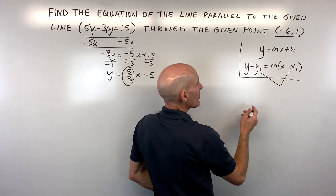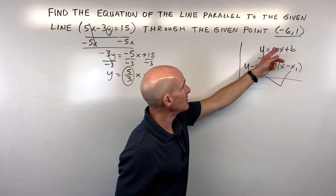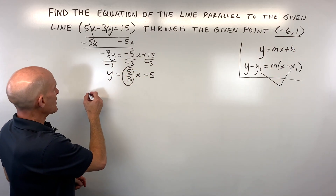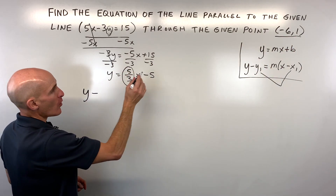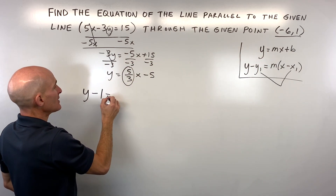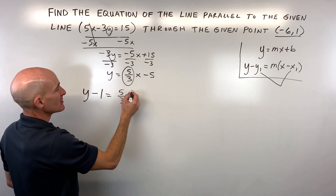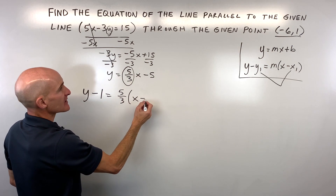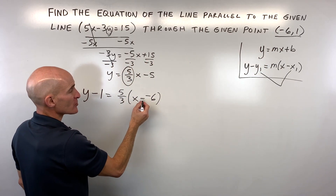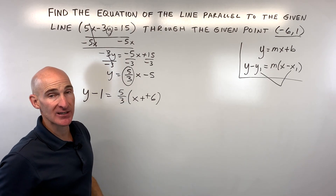x1 and y1 represent the point that the line is going through. We've got y minus the y-coordinate of our point, which is 1, equals our slope, 5 thirds, times x minus the x-coordinate of our point, which is negative 6. Of course, when you subtract, it's like adding the opposite, so you can write this as x plus 6.